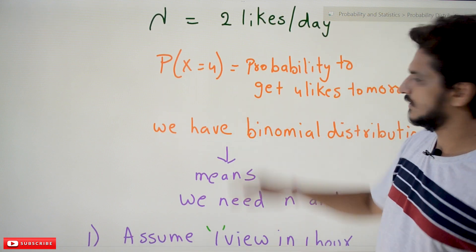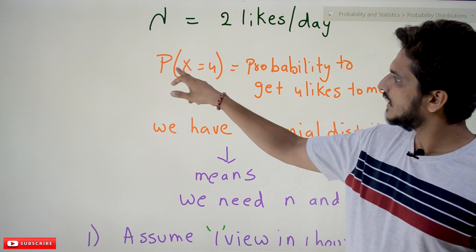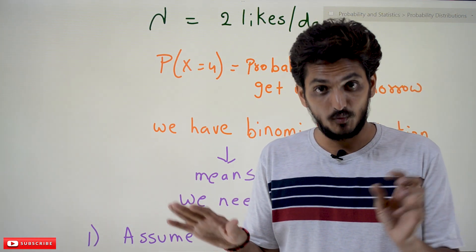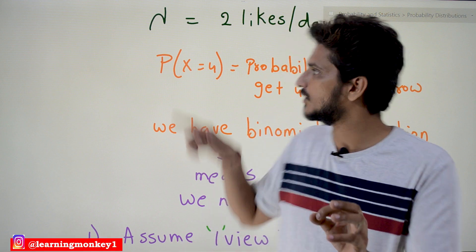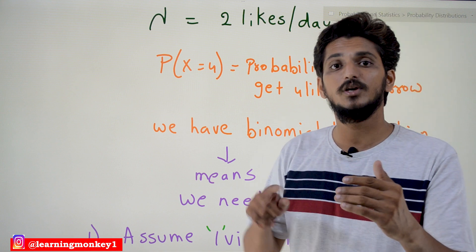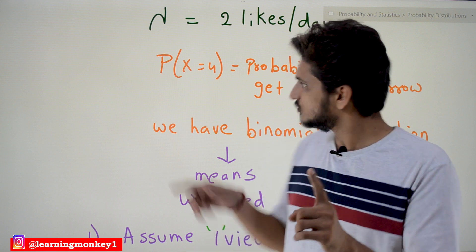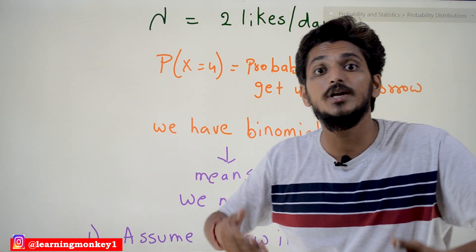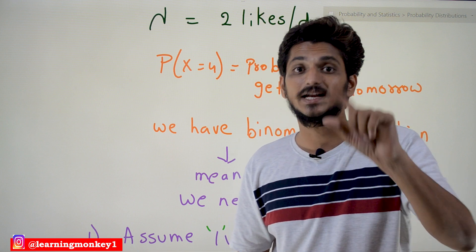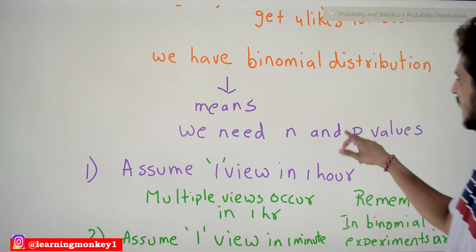Now, coming to the point — assume that lambda is equal to 2 likes per day, but assume that Poisson's distribution is not invented. We have only binomial distribution. Then how do we solve this problem if only the lambda value is given? If you understand that, then it is very easy to see why we get n tending to infinite. If you want to solve this using binomial distribution, we need to assume some n value and some p value — which n and p values do we assume? That is the point we are going to understand. We need n and p values.